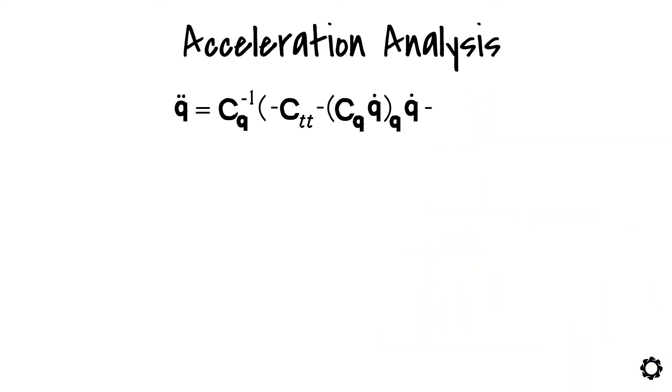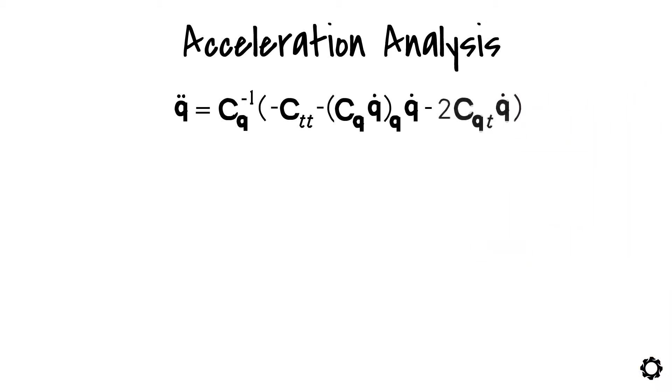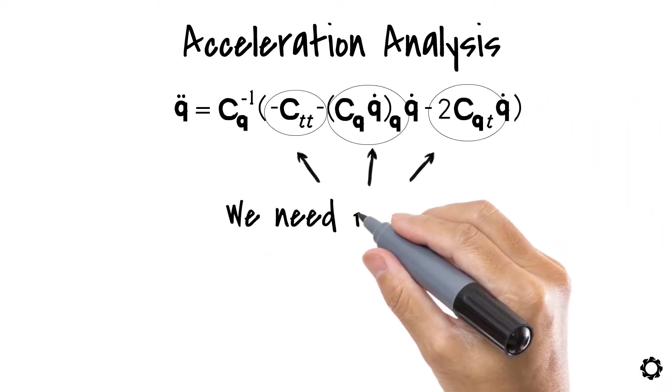minus 2 times cqt times q dot. Notice that we have a few terms missing which we need to derive, but let's continue from this in the next video.